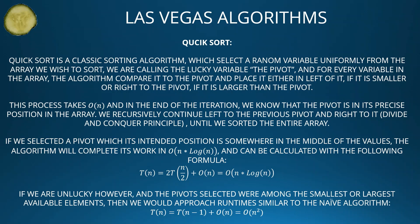If we selected a pivot whose intended position is somewhere in the middle of the values, the algorithm will complete its work in O(N log N) times, which can be calculated with the following formula: T(N) = 2T(N/2) + O(N), which equals O(N log N). If we are unlucky, however, and the pivot selected is among the smallest or largest available elements, then we would approach a runtime similar to the naive algorithm: T(N) = T(N−1) + O(N), which equals approximately O(N²).